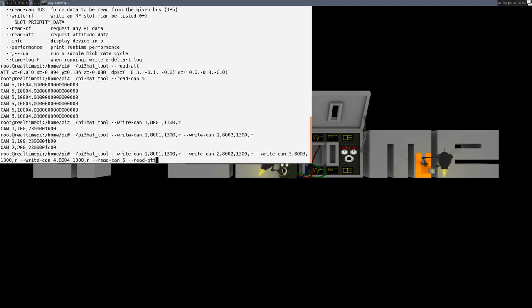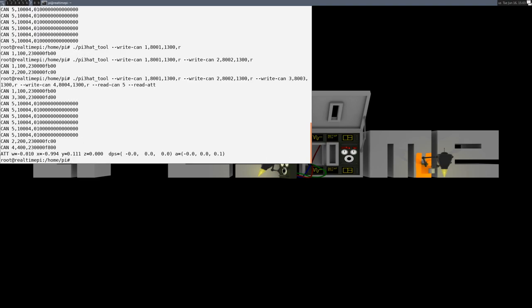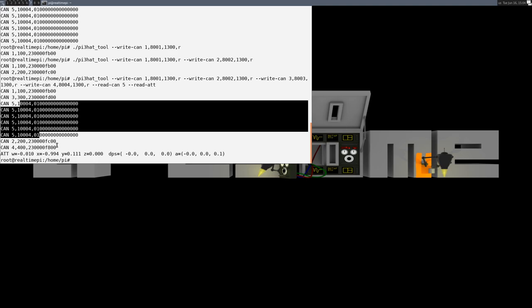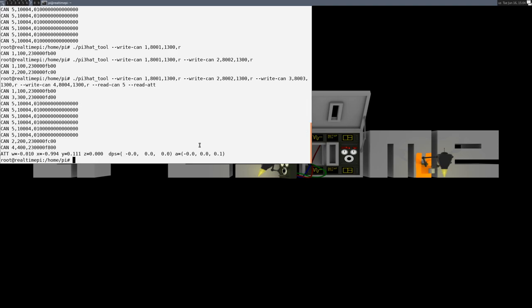So this is writing a query to all four servos, reading from the power disk board, and reading the attitude. And we can see that it did all those things. We got responses back from servo 1, 3, 2, and 4, and a bunch of packets from the power disk board and the attitude.